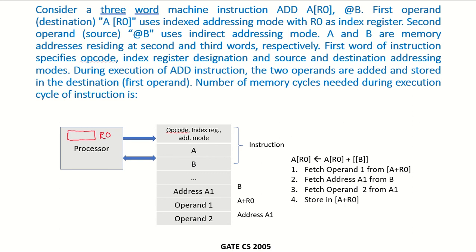This question uses addressing modes and it was one of the questions in the GATE 2005 exam. Consider a 3-word machine instruction: ADD AR0, @B. The first operand, which is the destination AR0, uses indexed addressing mode.